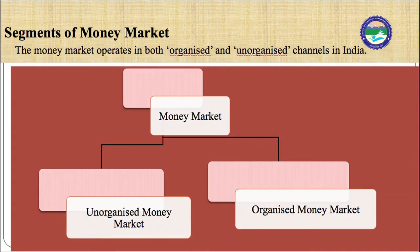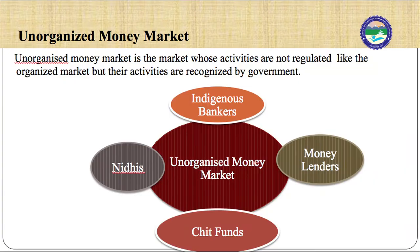The money market operates in both organized and unorganized channels. In India, transactions take place through intermediaries — that is, brokers — or directly between the trading parties. The unorganized money market is the market whose activities are not regulated like the organized market, but their activities are recognized by the government. The unorganized money market in India may be divided into three categories: indigenous bankers, money lenders, and unregulated non-bank financial intermediaries.